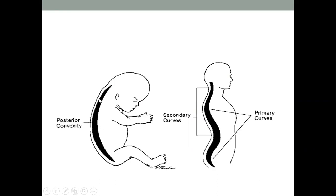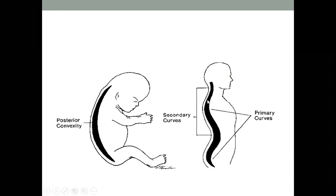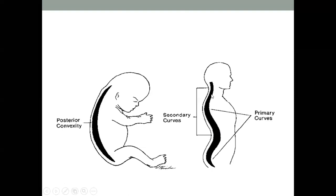At birth, we have two curves present — thoracic and sacrum — known as primary curves. With the passage of time, with age and weight-bearing on your spine, the infant starts to sit and the spine gets weight, and secondary curves develop. The lumbar and cervical spine develop lordotic curves. So primary curves are thoracic and sacrum, and the adult spine is S-shaped.